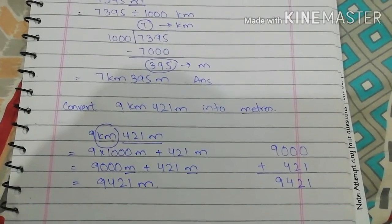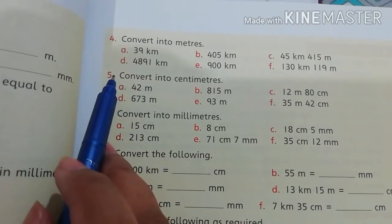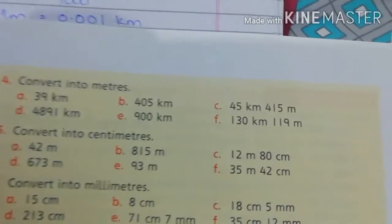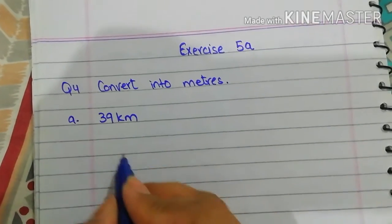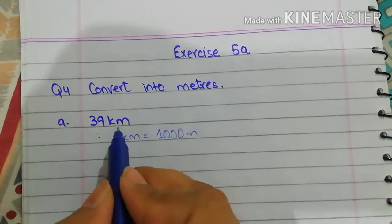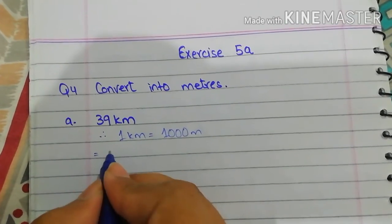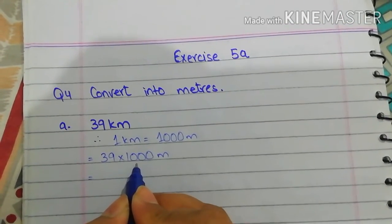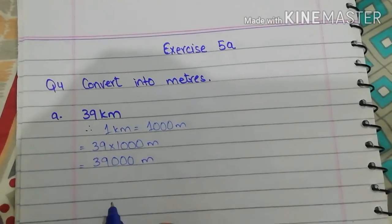Okay students, let's move to the exercise questions. Today we will cover question number 4 of exercise 5A, page number 115. Question number 4: convert into meters. Part A: 39 km. As we know, 1 kilometer equals 1000 meters. We convert this bigger unit into smaller, so we multiply: 39 multiplied by 1000 equals 39,000 meters. That is the answer.